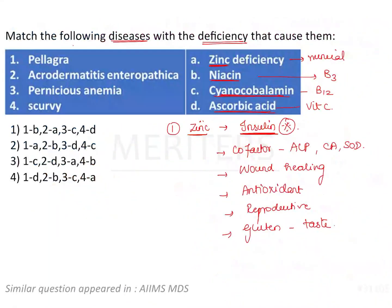Now getting back to the question, we can match the diseases. Pellagra is due to niacin deficiency — option B. Acrodermatitis enteropatica is due to zinc deficiency — option A. Pernicious anemia is due to deficiency of cyanocobalamin — option C. And scurvy is due to vitamin C deficiency, which is ascorbic acid — option D. Therefore, the correct combination is: 1-B, 2-A, 3-C, 4-D, making option one the right answer.